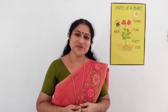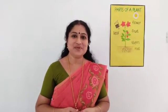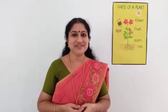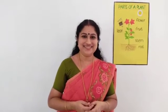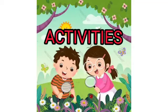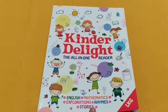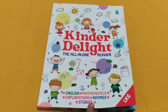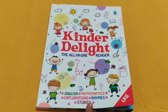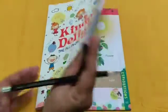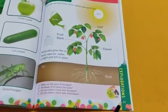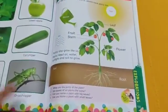Children, now you understood that, like us, plants also have different parts, and each part has its own functions. Now, let's do the activities. All of you take your Kinder Delight, the all-in-one reader, and turn to page number 103.